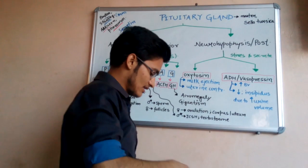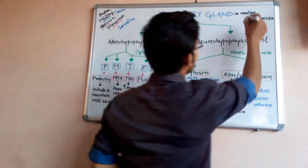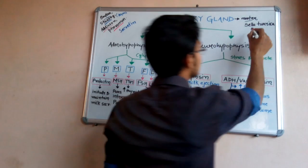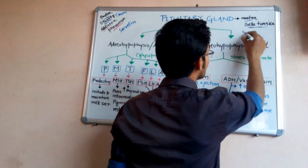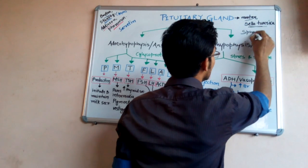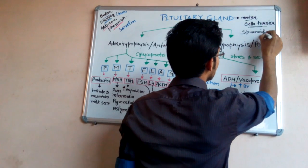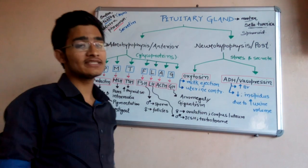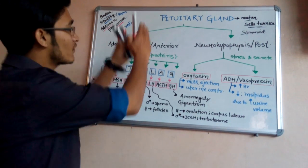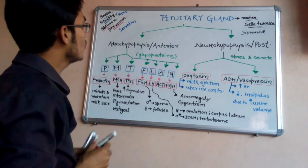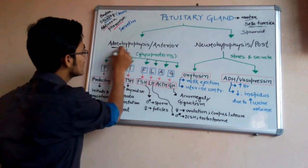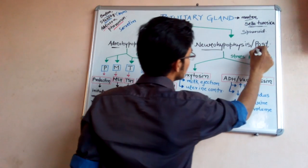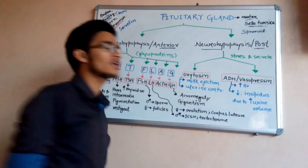Now we come to our main topic: the pituitary gland, which is also known as the master gland of our body. It is situated in the sella turcica of the sphenoid bone, and it is divided into two parts: adenohypophysis, which is the anterior pituitary, and neurohypophysis, which is the posterior pituitary.